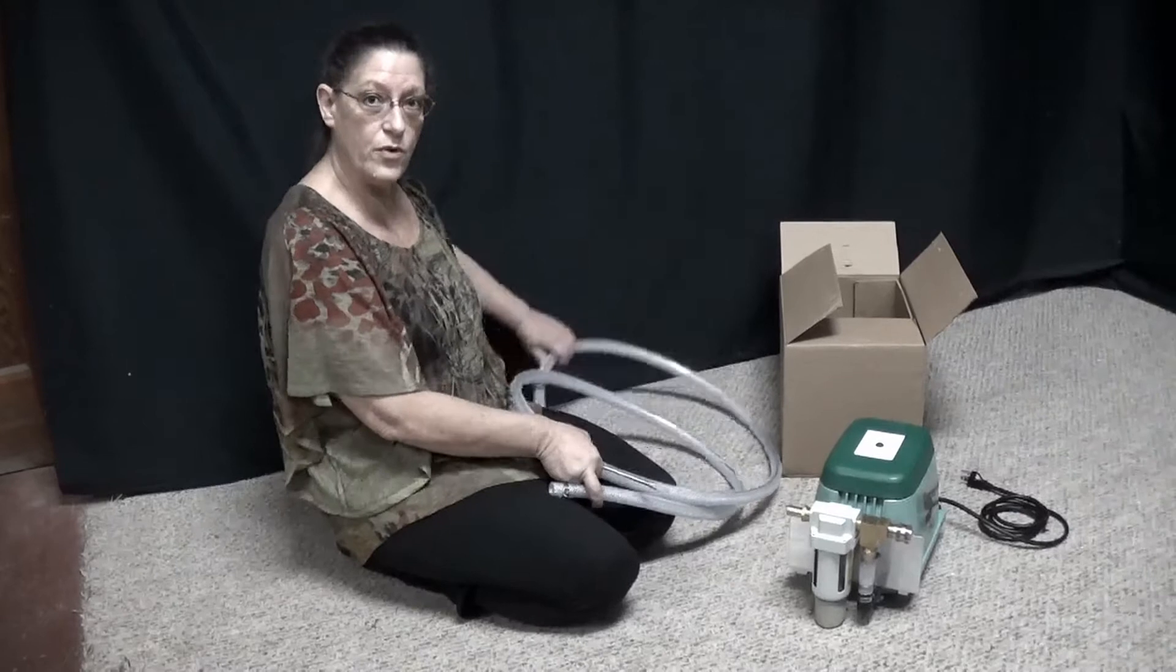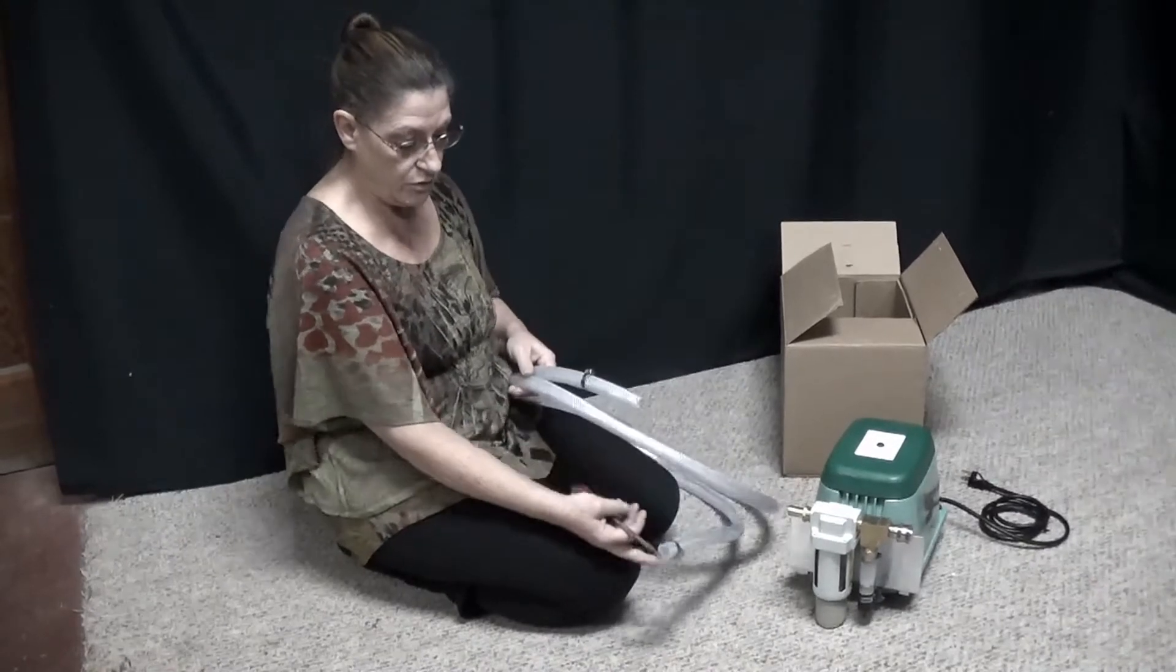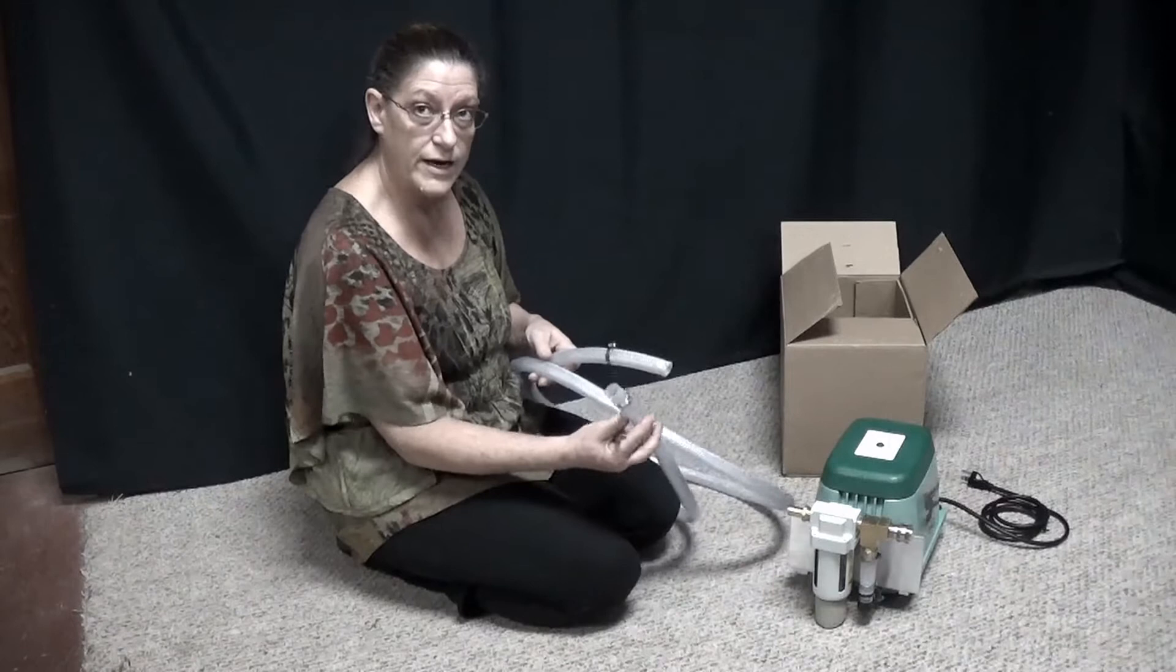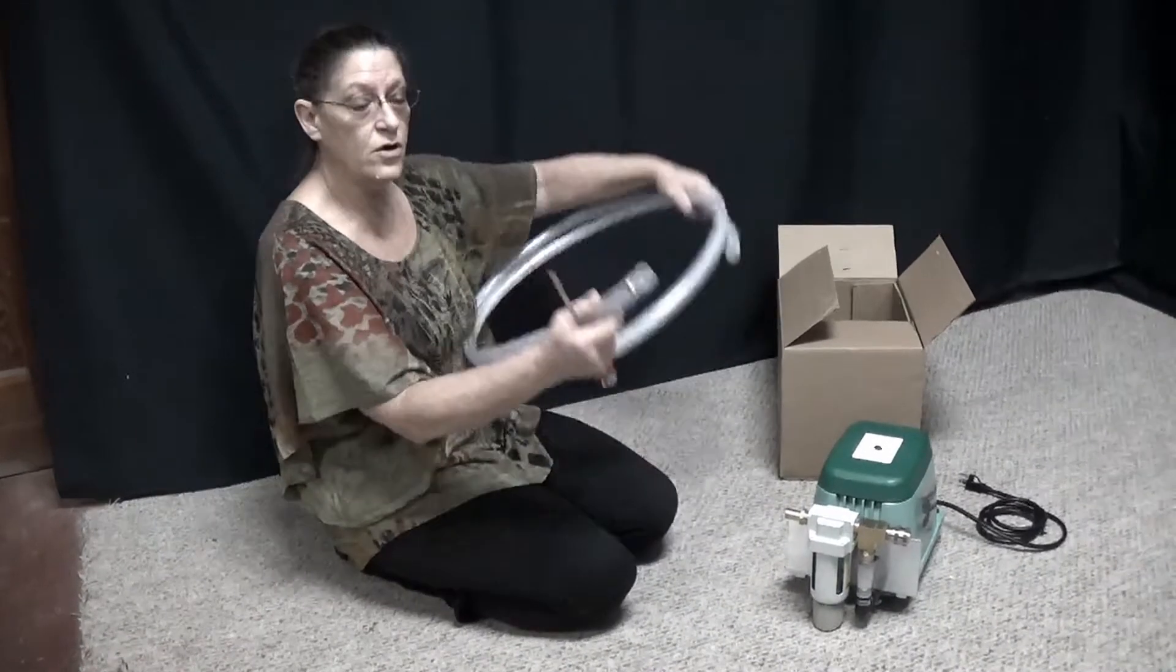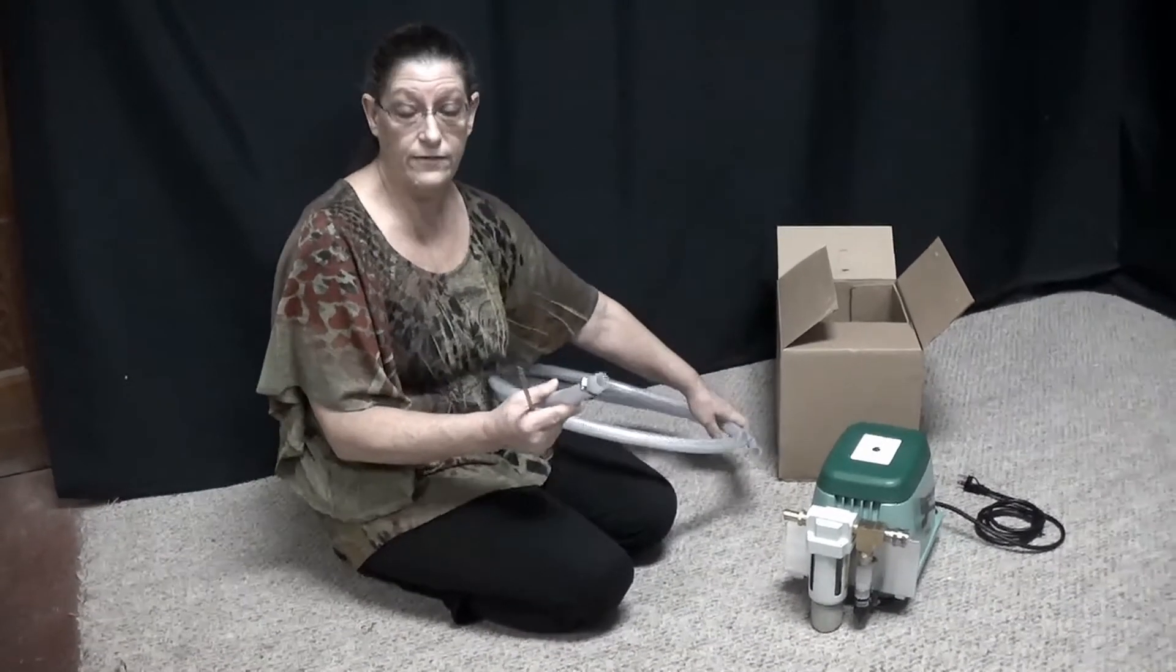Alright, so we're going to start with the compressor. I've already unwrapped my air hose. There are clamps at both ends. So right now we're only going to connect one end so that we're ready when we go to inflate the chamber.